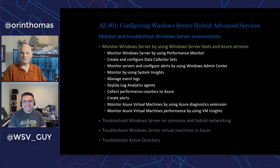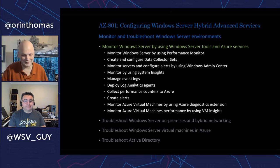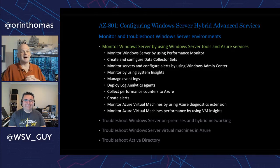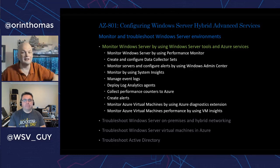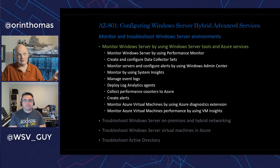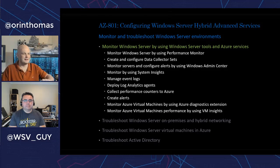Everything from Performance Monitor through moving up to using Windows Admin Center, moving even further and using System Insights — that great thing introduced in 2019 that's predictive about you're going to run out of disk space in this many days. Managing your event logs — more than just 'there are some red ones, I better look at those.' Coming up with a proper event log strategy such as event log forwarding and event log collectors.